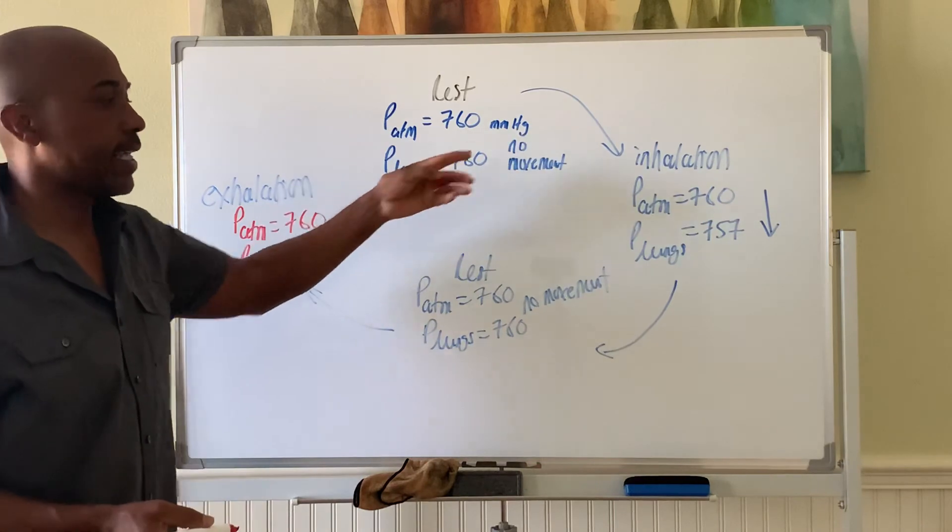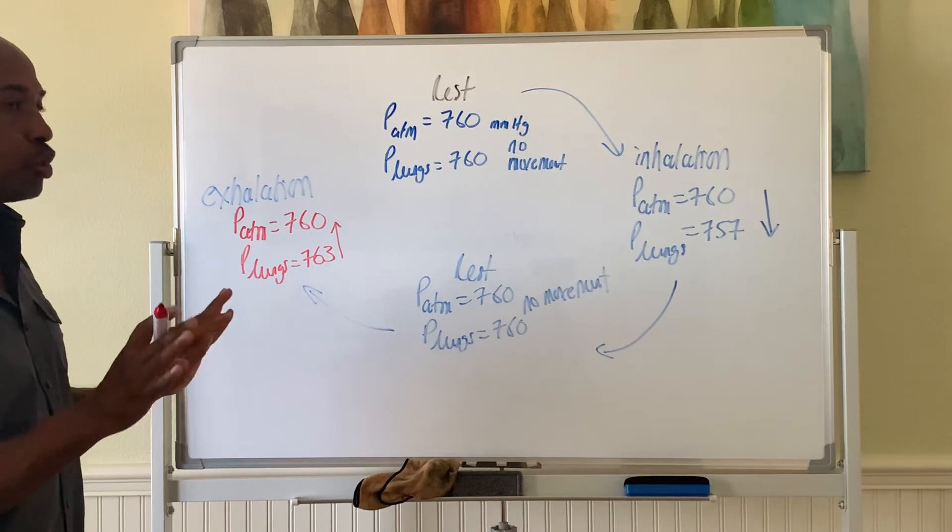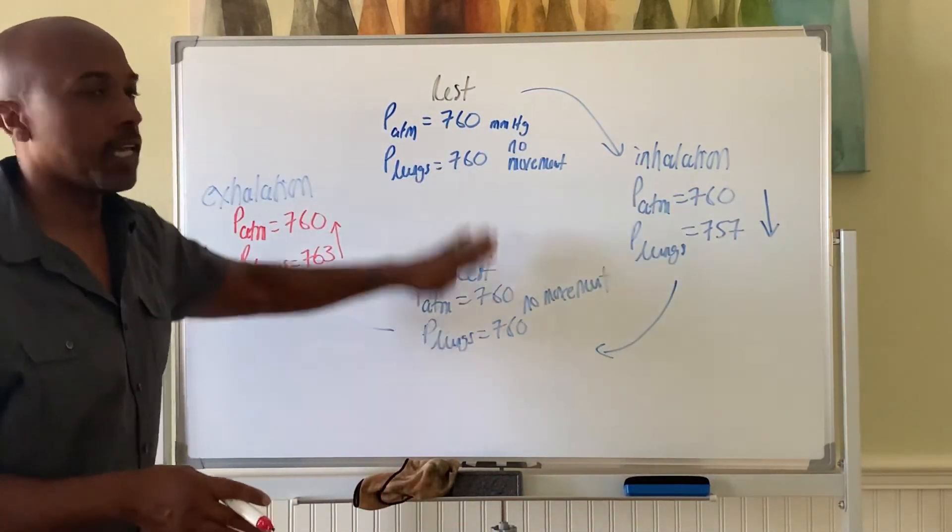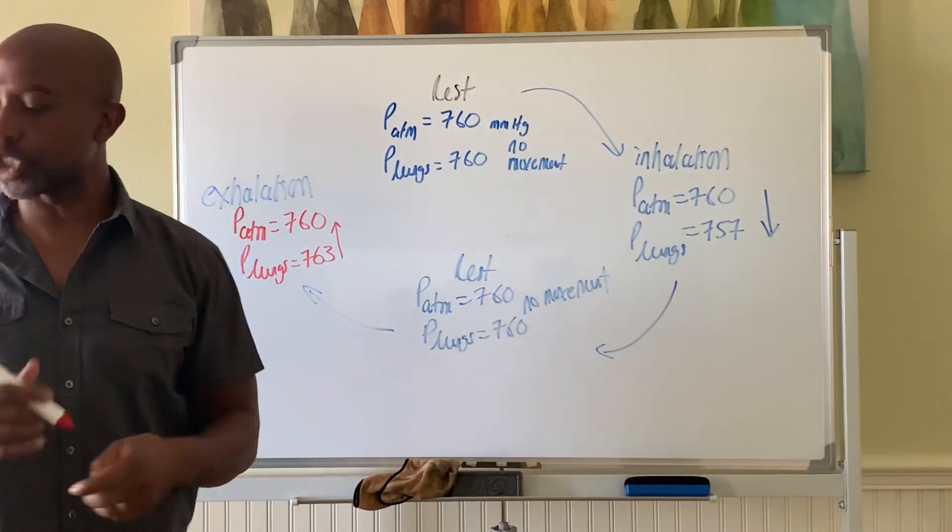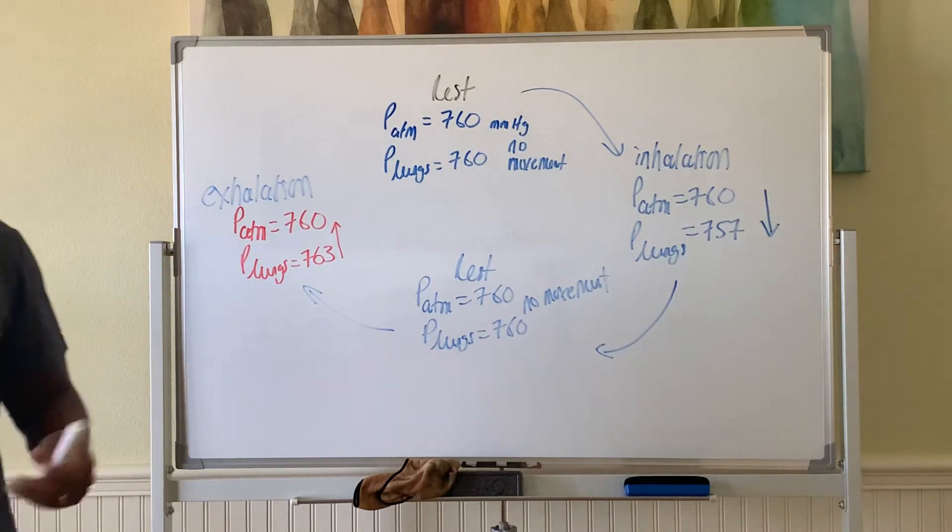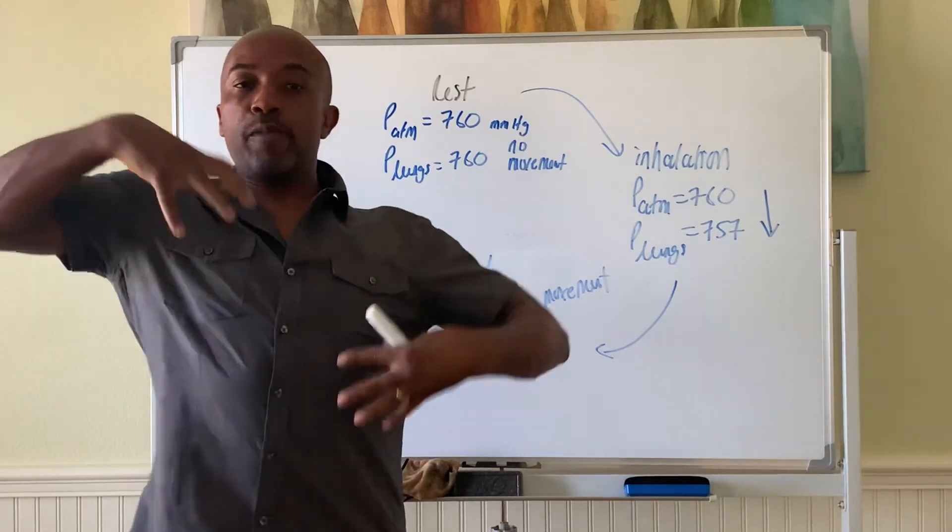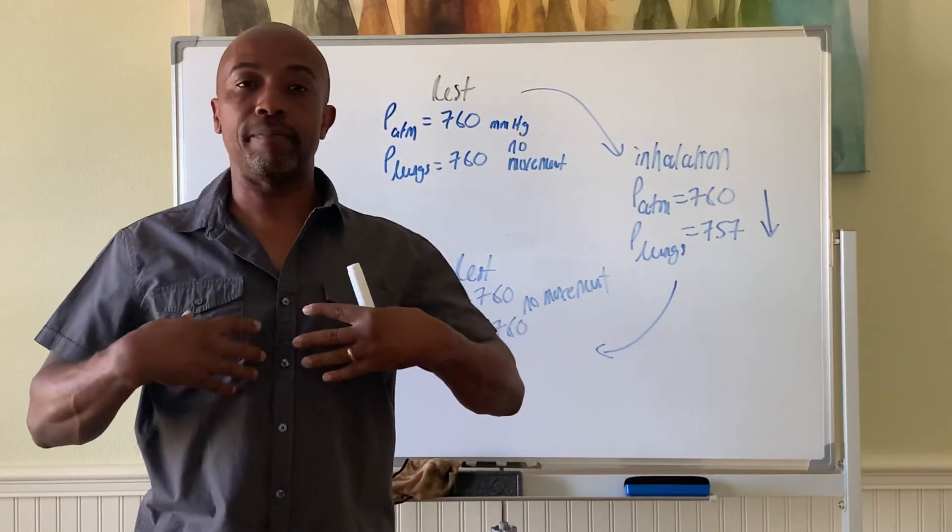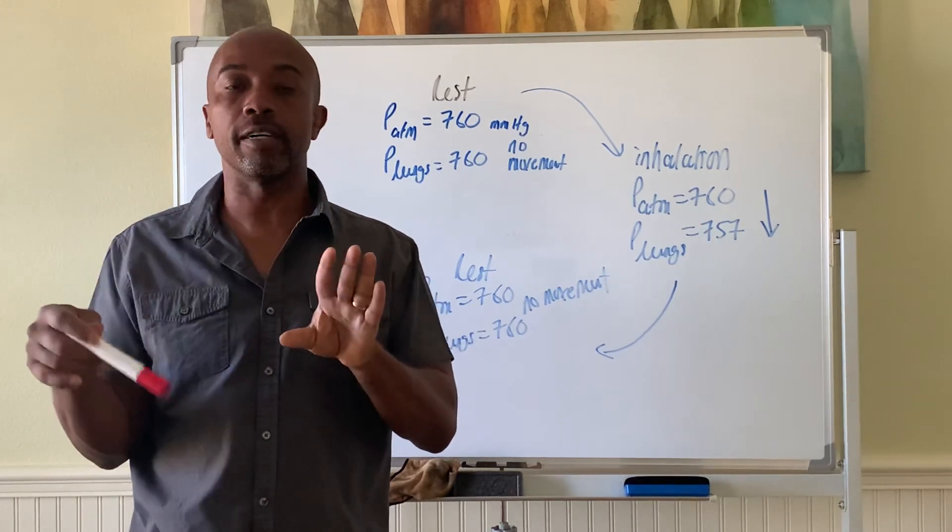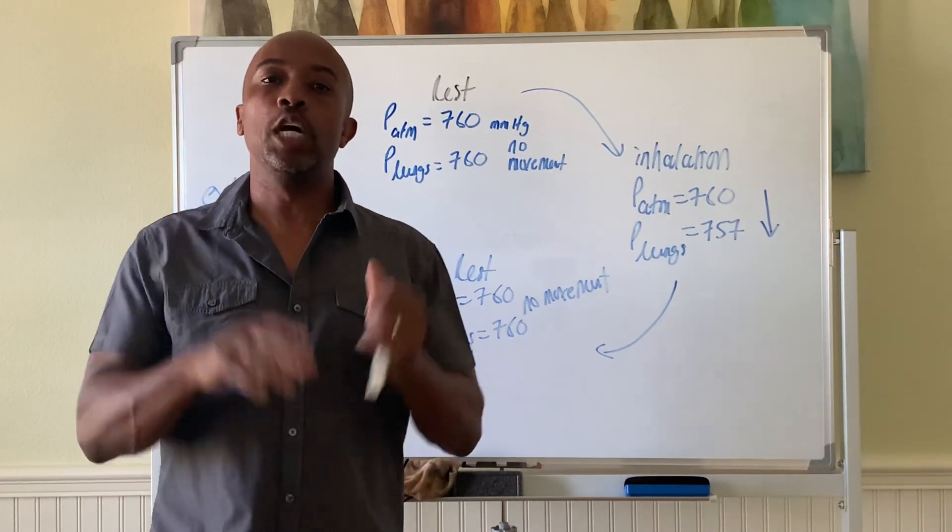So it's a cycle. Rest, inhale, rest, exhale. That cycle. And air moves, always moves from high pressure to low pressure. When it's equal, it stops moving. So that's the physical aspects of breathing. Just by varying your pressures, or just by you adjusting your volume, with this movement of the lungs and diaphragm, you will automatically affect the pressure. And then the pressure will drive the air. Always from high pressure to low pressure. Okay, we'll pause there.